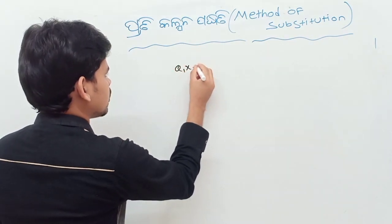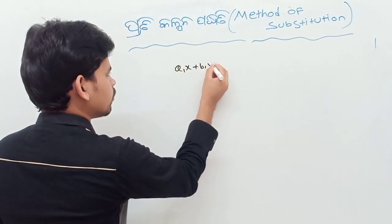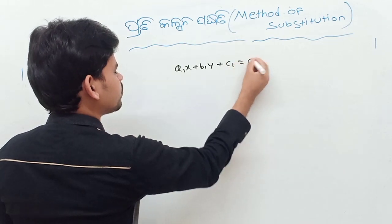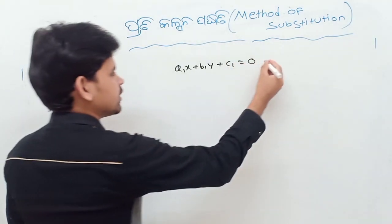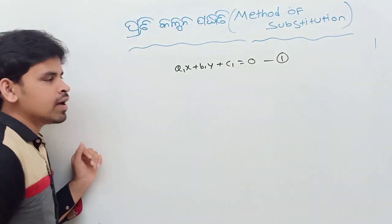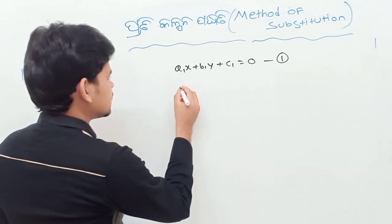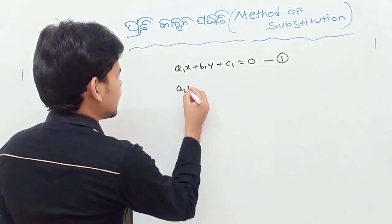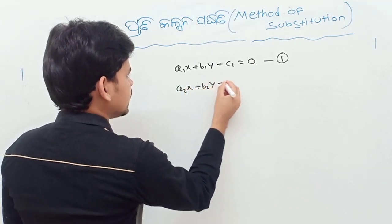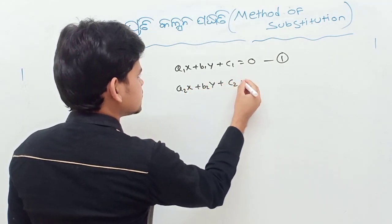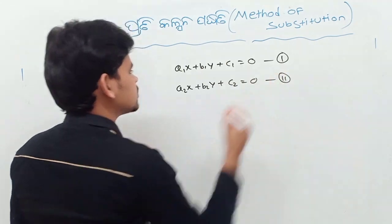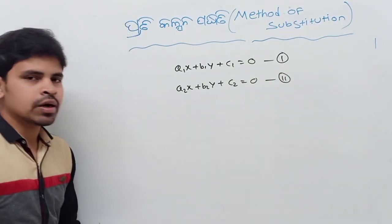a1x plus b1y plus c1 equal to 0. This expression is equation 1. This is a2x plus b2y plus c2 equal to 0. This is equation 2.